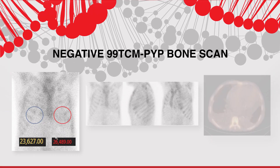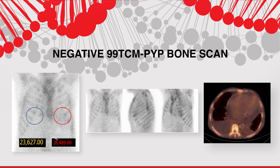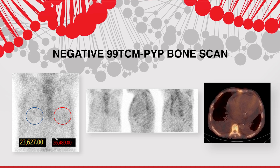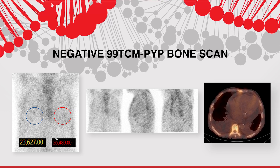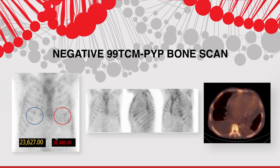As you can see on the slides, we use a PYP bone scan to see if there is any increased uptake within the myocardium. An accumulation of the PYP radiotracer within the heart indicates the presence of ATTR amyloidosis. However, in this case, we can clearly see that there is normal uptake within the bones and no uptake within the cardiac muscle. Therefore, the diagnosis of ATTR amyloidosis has been excluded.